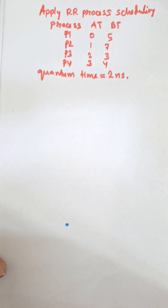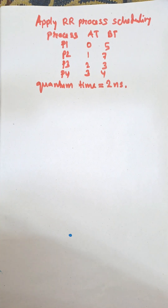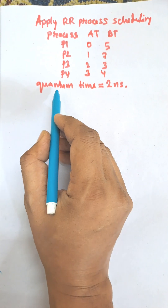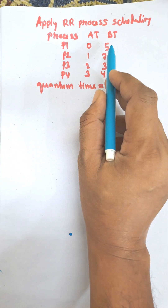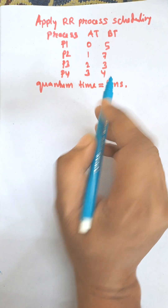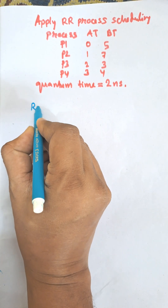Hi everybody, I am going to discuss Round Robin process scheduling and I am going to draw the Gantt chart of the Round Robin process scheduling. There are four processes given, arrival times 0, 1, 2, 3, and burst times are given. The time quantum is 2, so we need to draw the Gantt chart first.